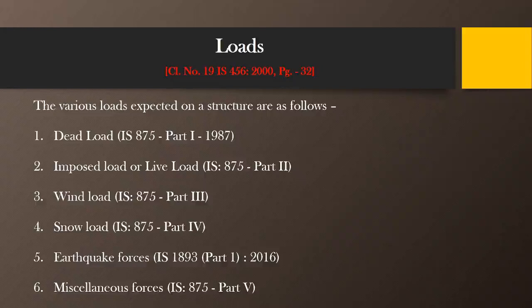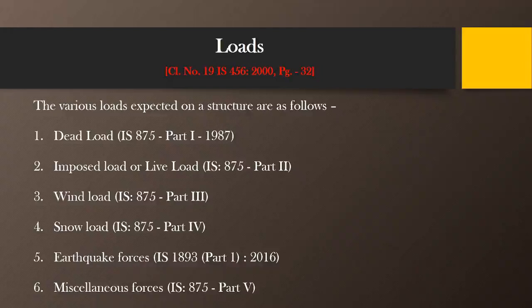Apart from all these loads there are some other loads, such as loads coming from traction particularly in industrial buildings, and loads which may be exerted on structural components during the erection of those structures. For example, during construction of a building we use equipment like cranes for lifting materials from one place to another. At that time some loads act on the structures which we normally do not consider in dead load, live load, wind load, etc. Such kinds of loads are to be considered as miscellaneous forces, and for this we have to refer to IS 875 part 5.